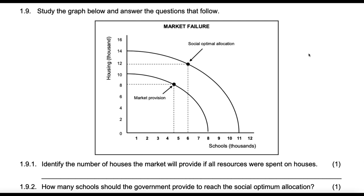Now study this graph and answer the questions that follow. Here we have two production possibility curves — one representing market provision, which is said to be undersupplied, and the other representing government intervention, which tries to bring up production or supply of merit goods. We can see that if government intervenes by bringing up consumption, that good is a merit good. Examples here are schools and housing, measured in thousands.